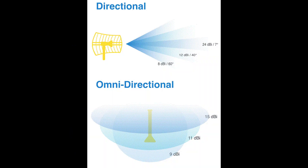This video is on antenna types. A wireless antenna is an integral part of overall wireless communication. Antennas come in many shapes and sizes, with each one designed for a specific purpose.